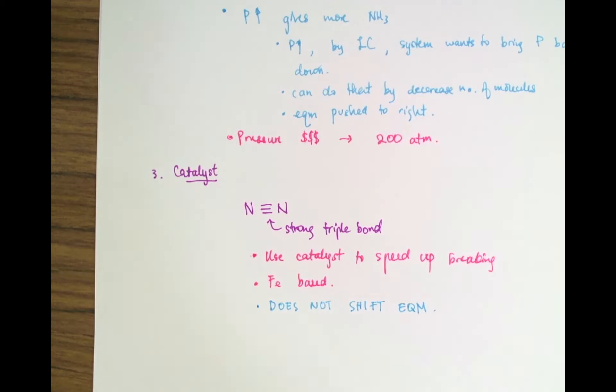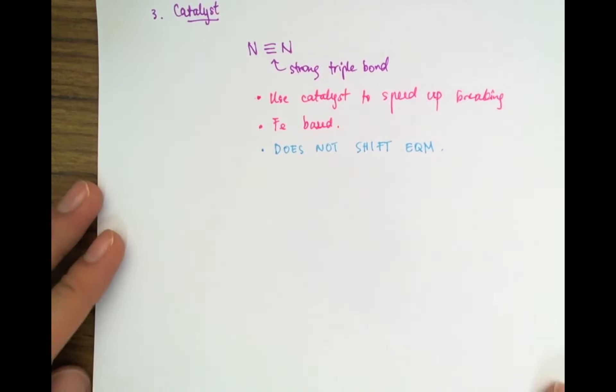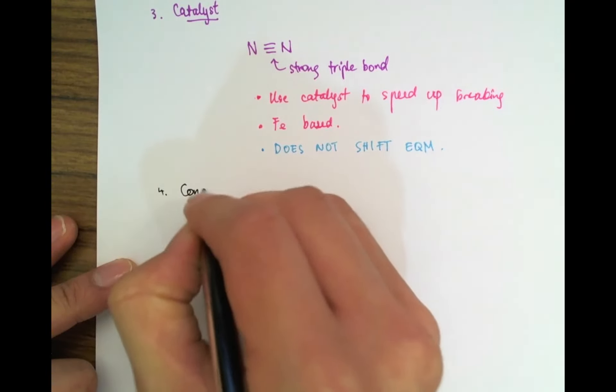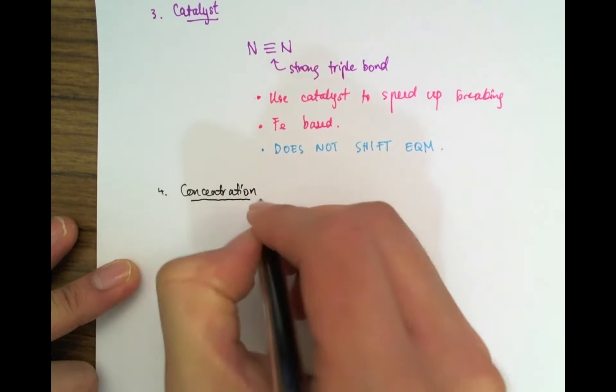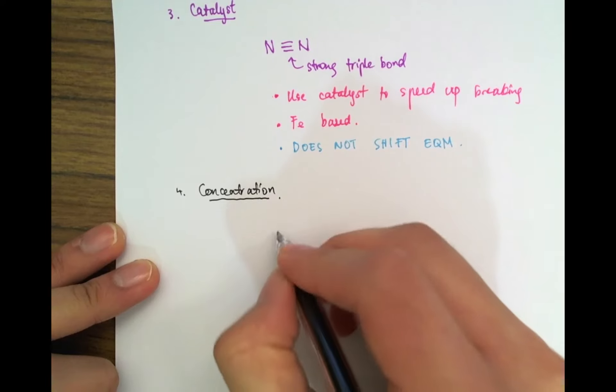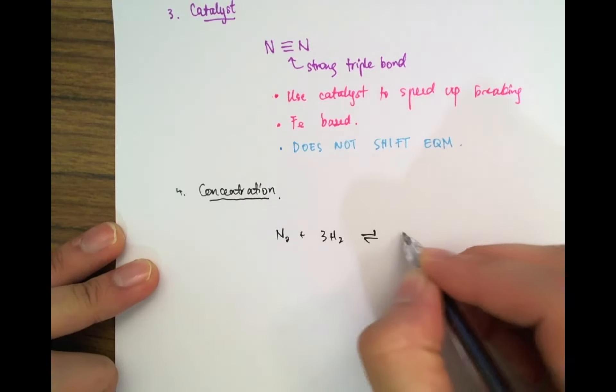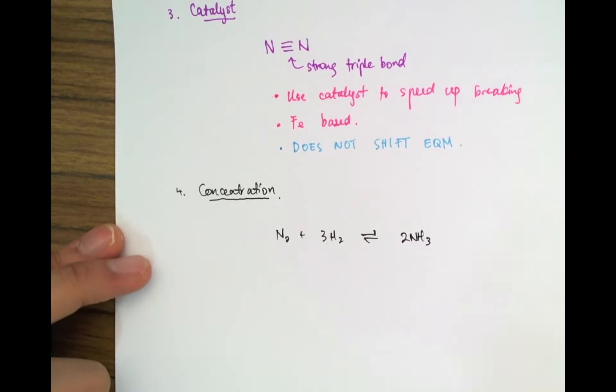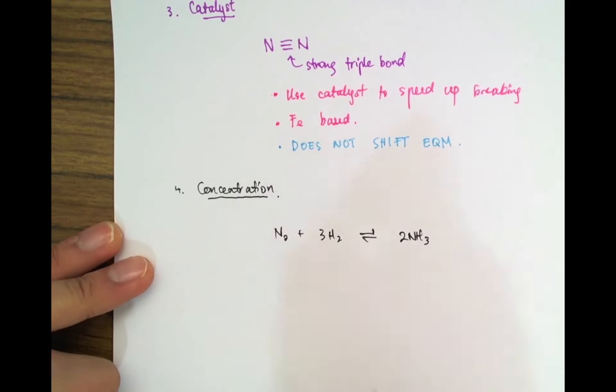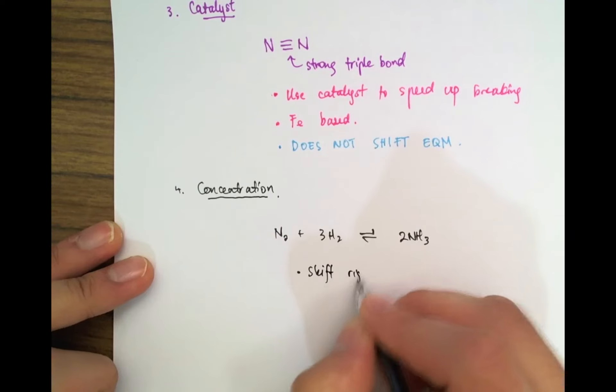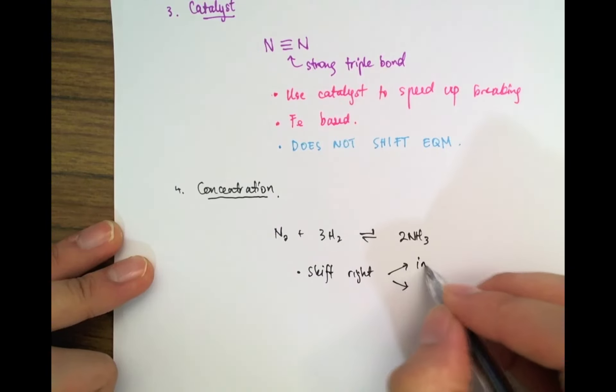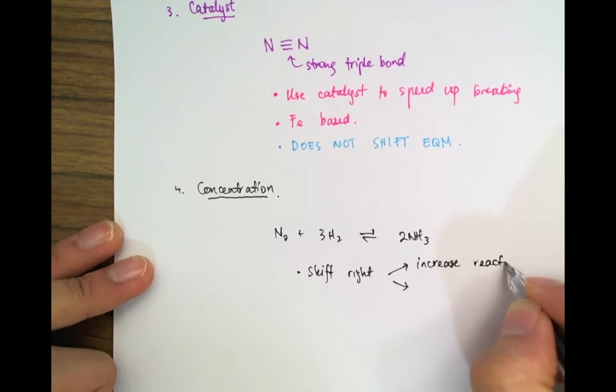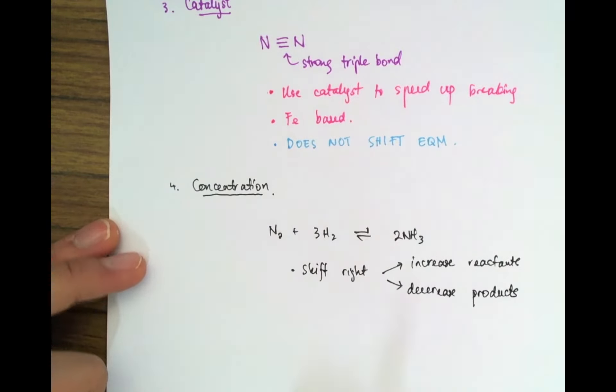The fourth and final effect we'll take a look at is how concentration can change the equilibrium. So let's take a look at the effect of concentration. Now, if you recall from the previous video, we can shift the equilibrium to the right by doing two things. We can either increase the concentrations of the reactants, or we can decrease the concentrations of the products. And in this case, we're going to want to do both. So, how do we do that?